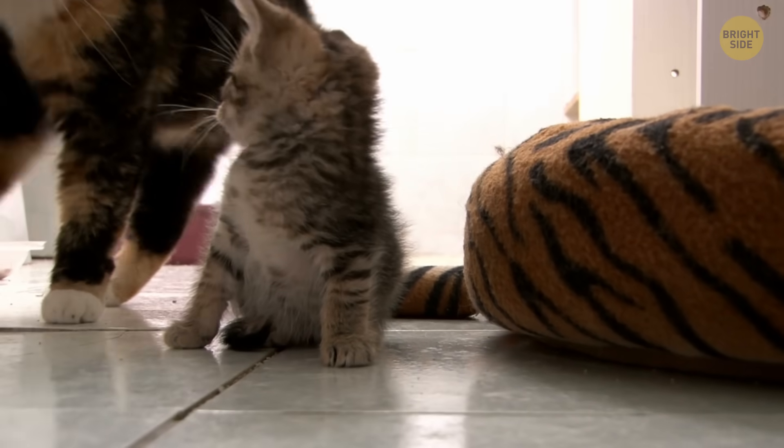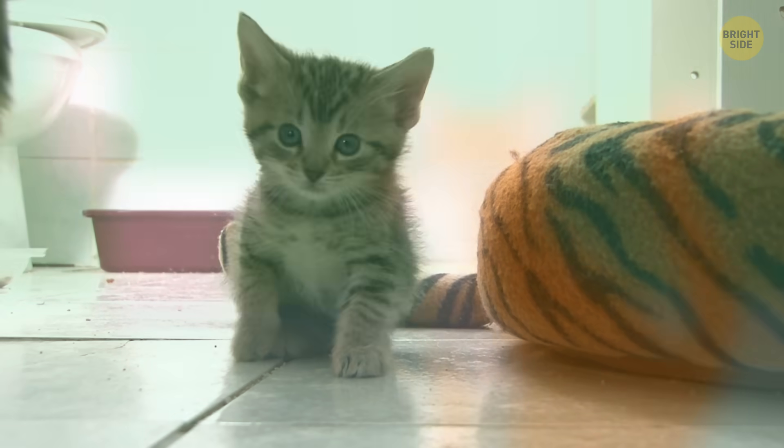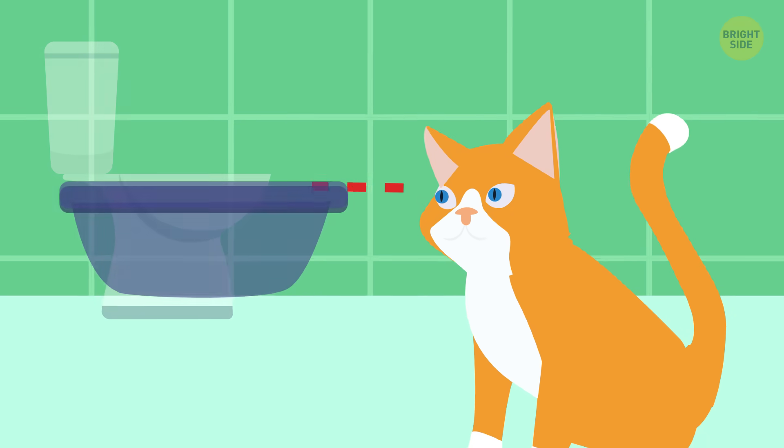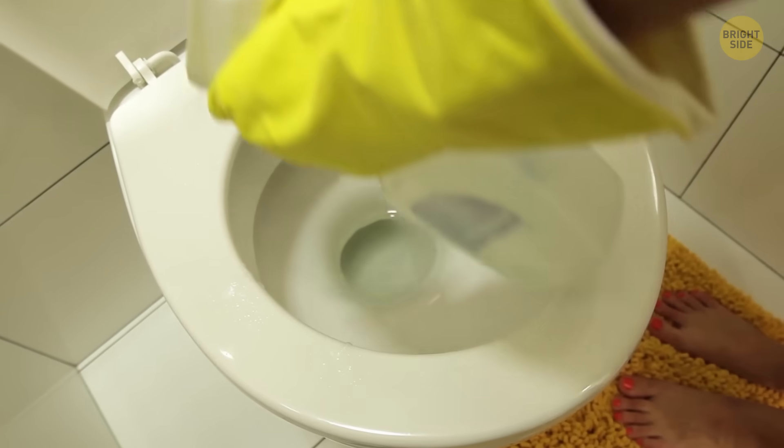Another reason we have lids on toilets is to protect our pets. It's gross, but puppy and kitty look at the toilet as a big ol' water dish.